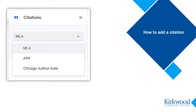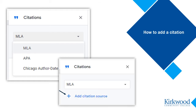First, select what style of citation you want to use. I'm going to select MLA for the sake of this demonstration. Second, for each source you cite in your paper, you will click on Add Citation Source. This is what brings up the form where you can add information about your source.